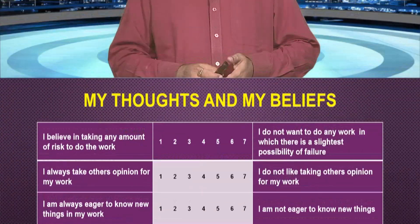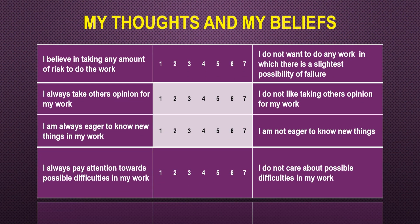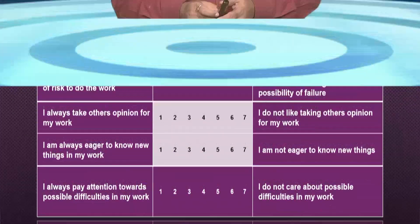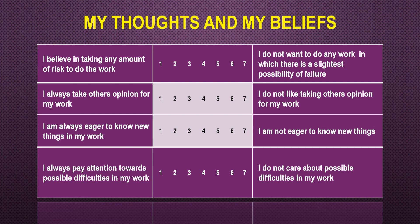At number 6 you believe 80 percent in the right hand statement and 20 percent in the left hand statement. The second pair is: I always take others' opinion for my work, opposite to I do not like taking others' opinion for my work — both are contradictory. You have to say where you lie, meaning what is your actual personality. The third is: I am always eager to know new things in my work; right hand side says I am not eager to know new things in my work. The fourth pair says on the left hand side: I always pay attention towards possible difficulties in my work — before I start anything I think of all possible difficulties and then take action. On the right hand side: I do not care about the possible difficulties in my work.